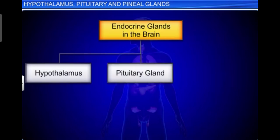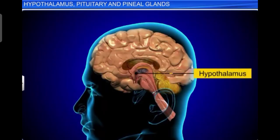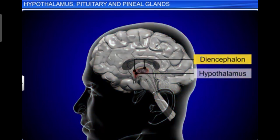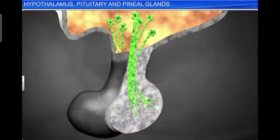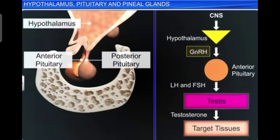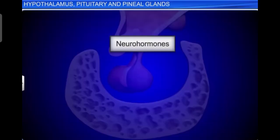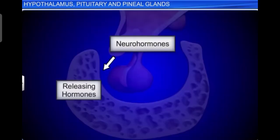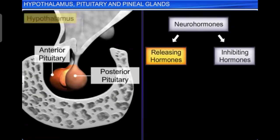There are three endocrine glands in the brain. First is the hypothalamus, situated at the basal part of the diencephalon in the forebrain. It contains several groups of neurosecretory cells called nuclei, which produce hormones called hypothalamic or neurohormones. These hormones regulate the synthesis and secretion of pituitary hormones. Hypothalamic neurohormones are of two types: releasing hormones and inhibiting hormones.